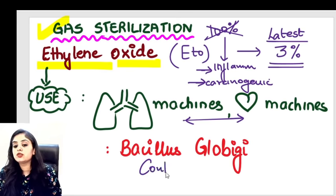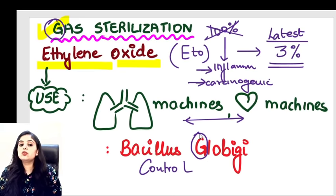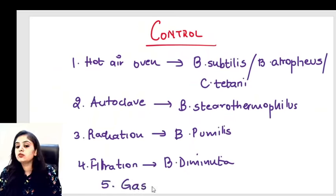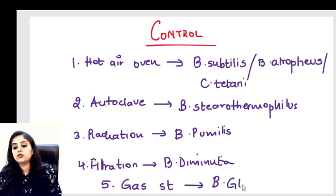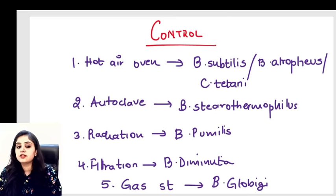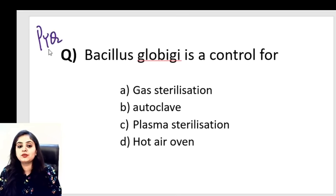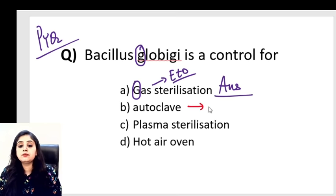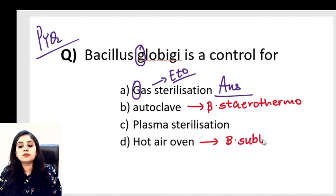The control for gas sterilization is Bacillus globigii — remembered as G for gas, G for globigii. MCQ: Bacillus globigii is used as a control for — the answer is gas sterilization with ethylene oxide. Revisiting controls: autoclave → Bacillus stearothermophilus; hot air oven → Bacillus subtilis / atrophius / Clostridium tetani; gas sterilization → Bacillus globigii.